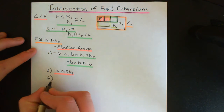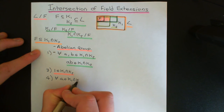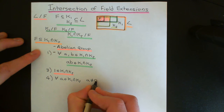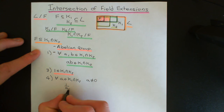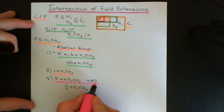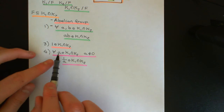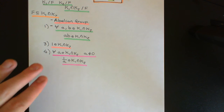Axiom four: all non-additive-identity elements must have a multiplicative inverse. For all A in K1 intersect K2 with A not equal to the additive identity, we need 1/A to be in K1 intersect K2. This follows directly from the fact that K1 and K2 are subfields. If A is in K1 intersect K2, then A is in both K1 and K2, and since they're both subfields, they must both contain the multiplicative inverse of A. So the multiplicative inverse is also in the intersection.